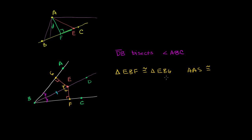If these two triangles are congruent, then the corresponding sides are going to be congruent. So the length of segment EF is going to be congruent to segment EG — which is the same as saying the length of EF equals the length of EG. These are really equivalent statements.